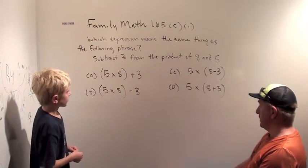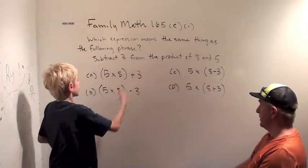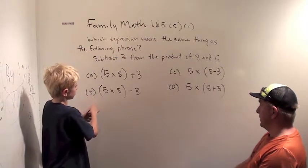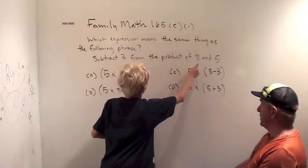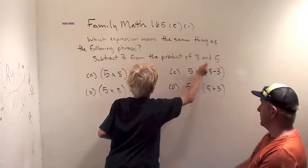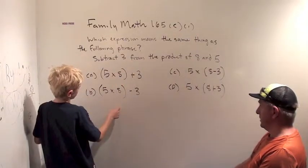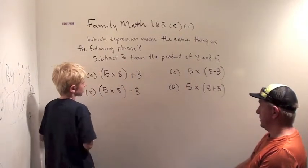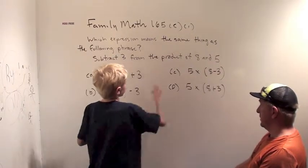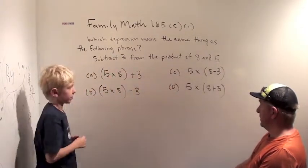But you can sort of flip these phrases around. And I think it would be 5 times 8, which is 40, and then minus 3. So you basically flip the whole thing around.